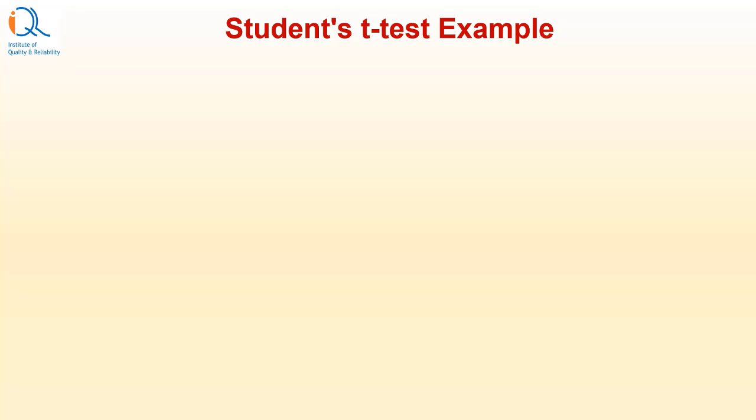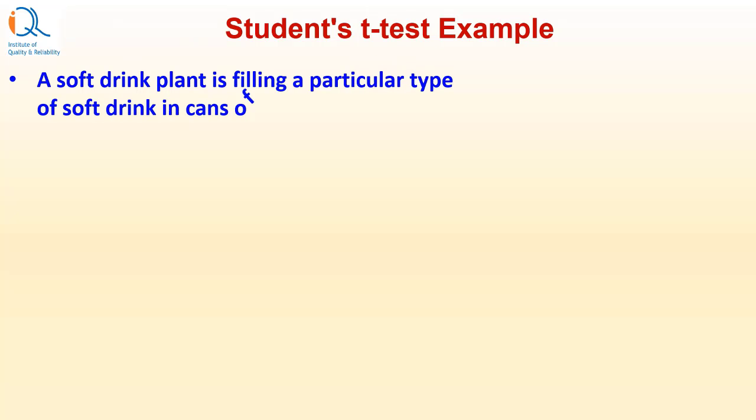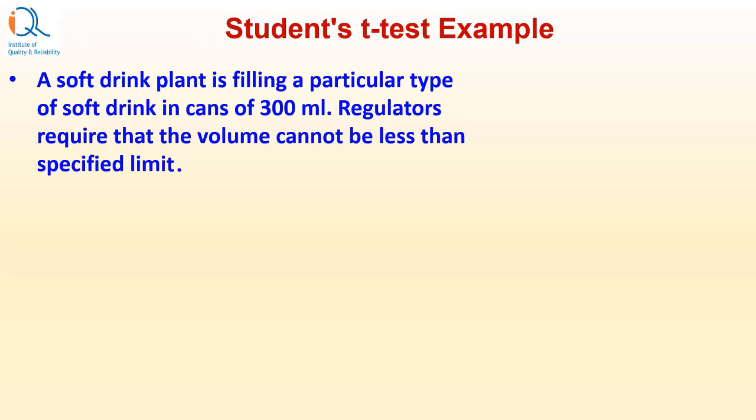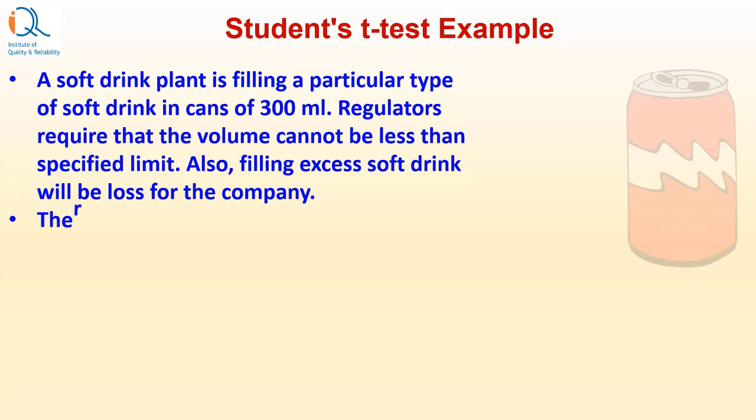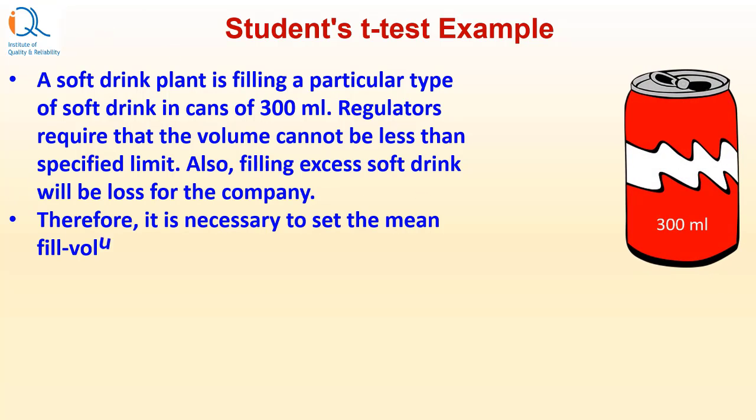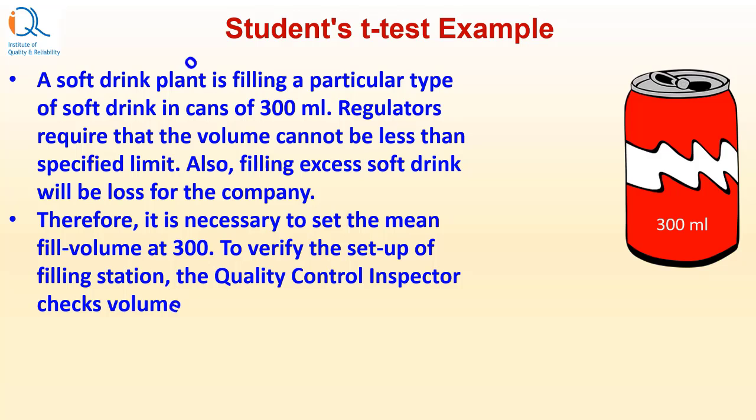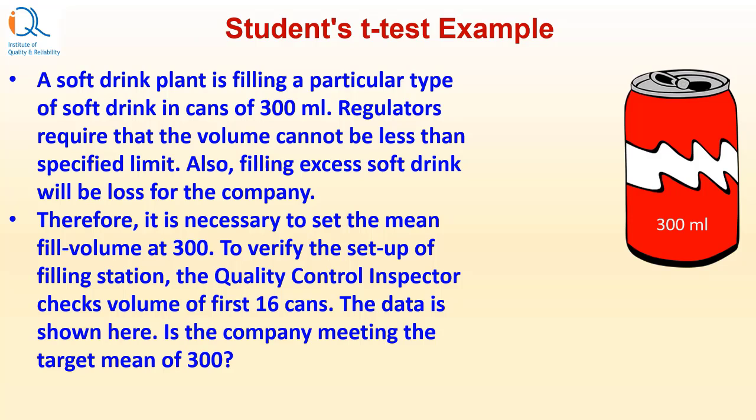Let us see an example of student's T-test. A soft drink plant is filling a particular type of soft drink in cans of 300 ml. Regulators require that the volume cannot be less than specified limit. Also, filling excess soft drink volume will be a loss for the company. Therefore, it is necessary to set the mean fill volume at 300. To verify the setup of filling station, the quality control inspector checks volume of first 16 cans. The data is shown here. Is the company meeting target mean of 300 ml?